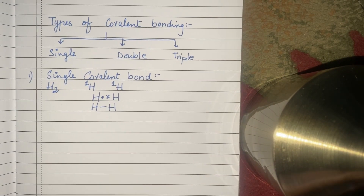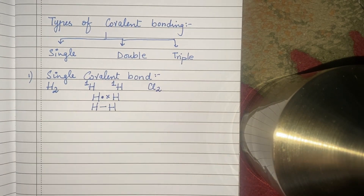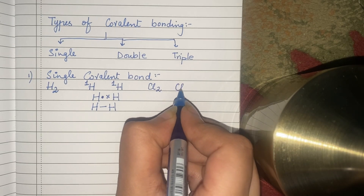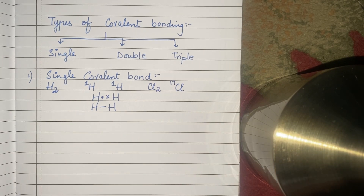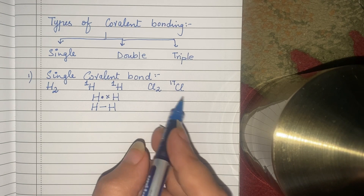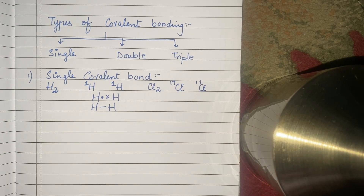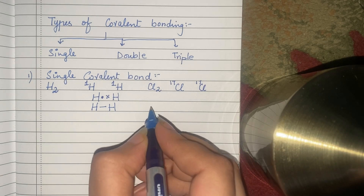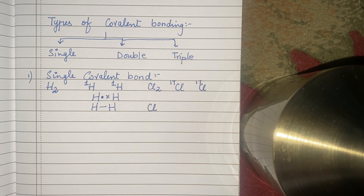हम लोग एक example और भी देख सकते हैं, chlorine की — Cl2. हमें पता है कि chlorine का atomic number होता है 17, तो उसके outermost shell में 7 electrons हैं. उसको stable होने के लिए एक और चाहिए, क्यूंकि वो octet rule को follow करता है — पहले shell में 2 electrons होने चाहिए, और बाकी shells में 8 electrons होने चाहिए. तब वो एक stable configuration achieve करता है. हमारे पास Cl2 बना रहे हैं, तो दोनों के outermost shell में 7 electrons हैं, और दोनों को stable होने के लिए एक-एक electron की ज़रूरत है. एक chlorine के electrons को dot से show करूँगी, दूसरे chlorine के electrons को cross से show करूँगी.